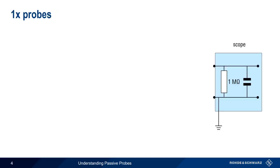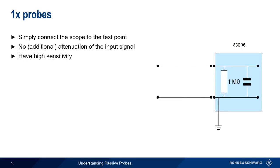A 1x probe simply connects the scope to the test point without any additional attenuation. This means that 1x probes have high sensitivity and can see small signals more easily. A 1x probe is therefore useful when the signal level is low, say, less than 1 volt peak-to-peak.